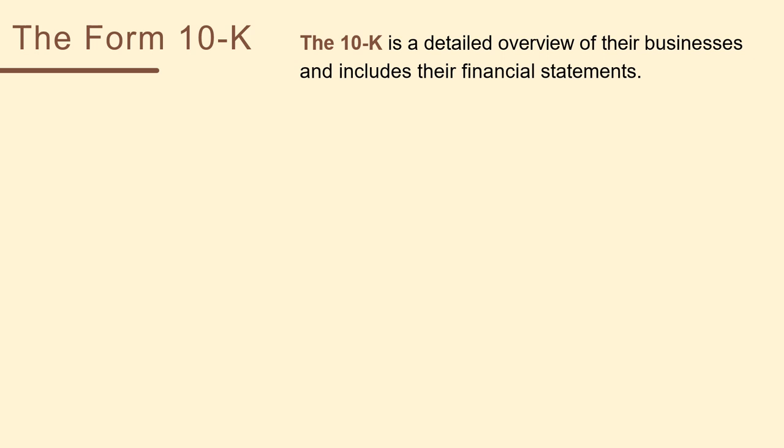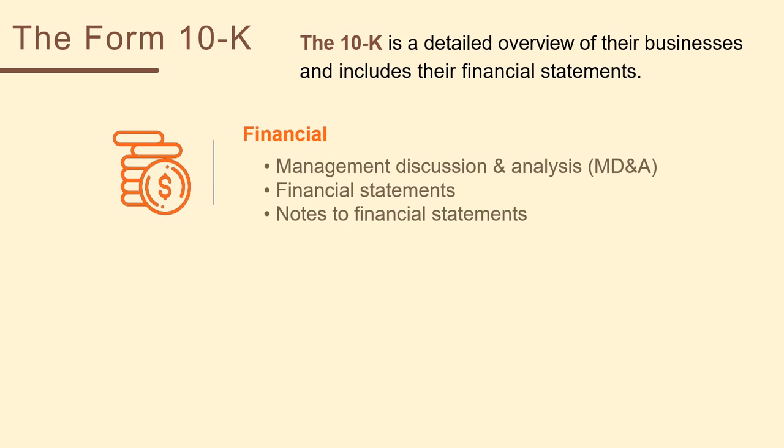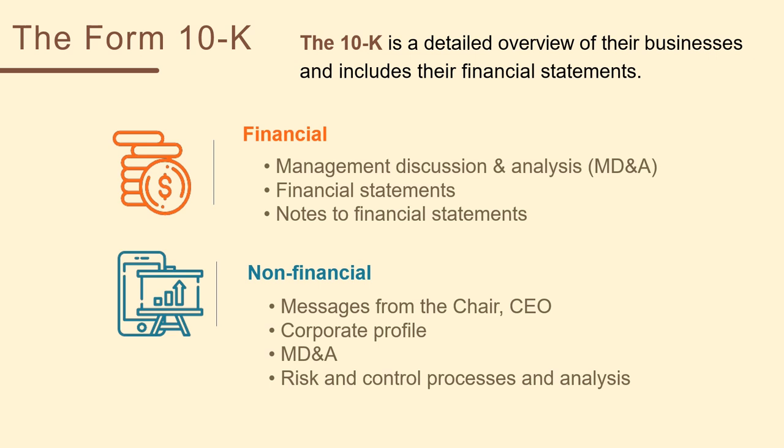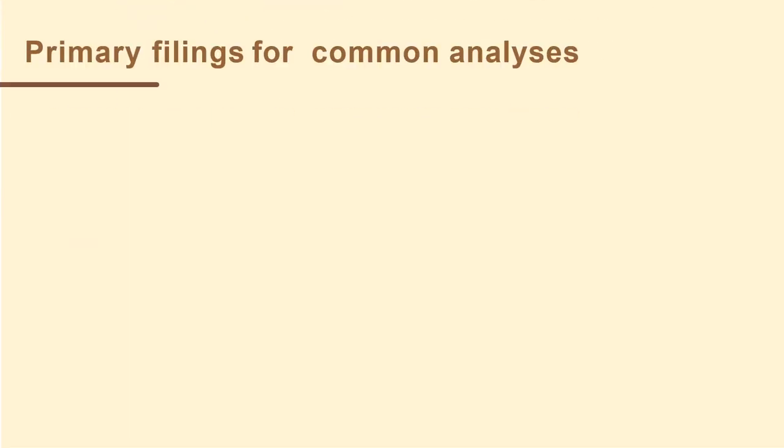The Form 10-K is the primary document for company data. At the end of each fiscal year, publicly traded companies must file a 10-K, which is a detailed overview of their businesses and includes their financial statements. A 10-K contains details regarding financial information such as stock options, fixed and intangible assets, debt, and future expectations, and includes extensive management discussion and analysis, also known as MD&A. The 10-K also includes non-financial information such as strategic direction from the CEO, the corporate profile, and risk control processes and analysis. These are generally filed within 60 to 90 days following the year end.